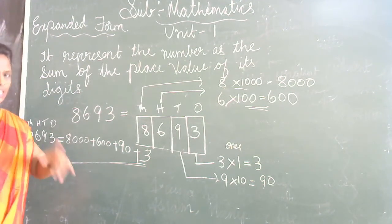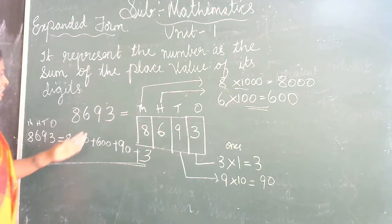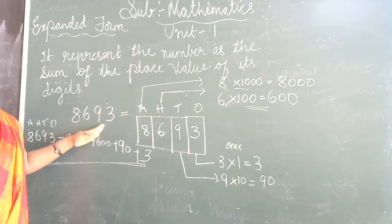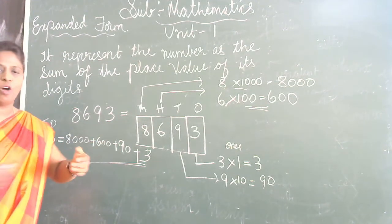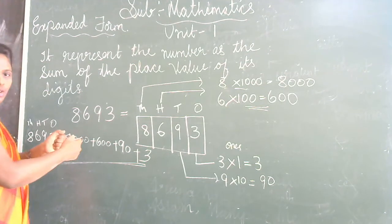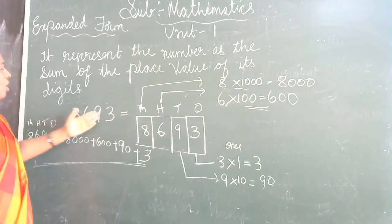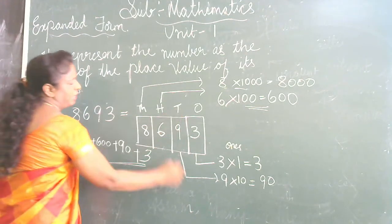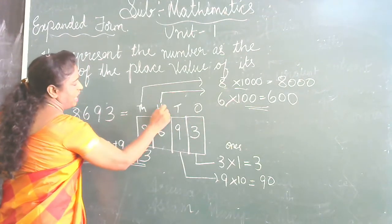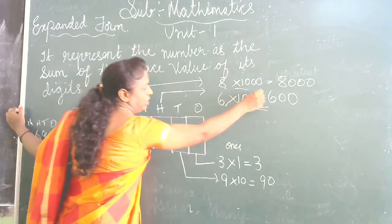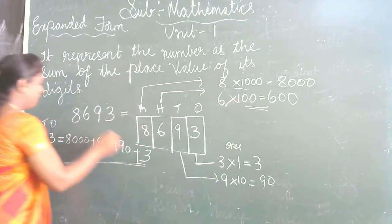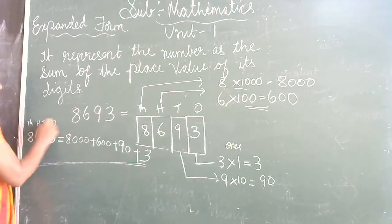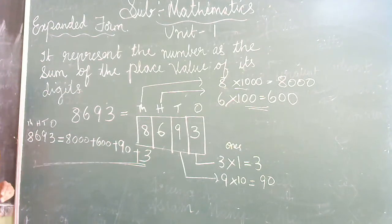Is it clear, children? I will explain once more. If they give you a number — a four-digit number — and they ask you to write in expanded form, you have to expand it as I showed you. See here, I have written to make it clear: 8693 — this is the expanded form.